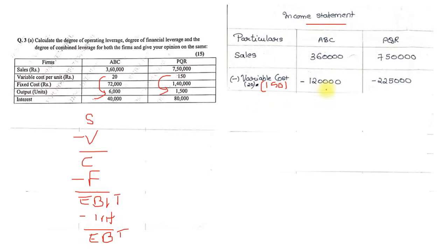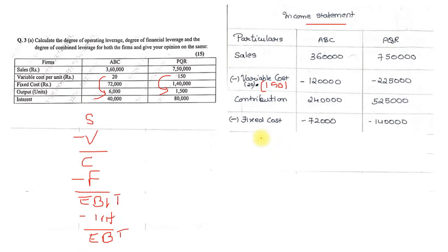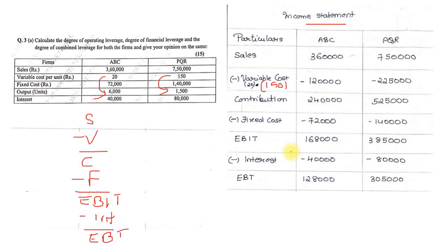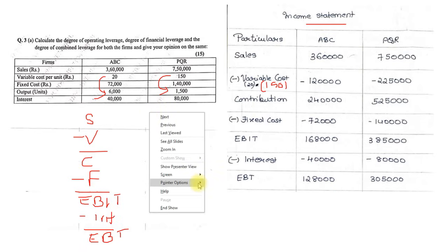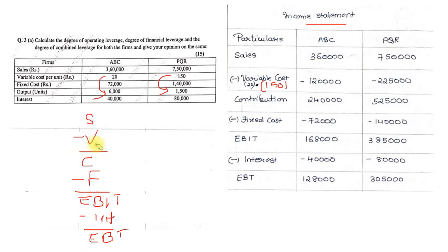Contribution comes to 2,40,000 for ABC and 5,25,000 for PQR. Less fixed costs of 72,000 and 1,40,000 respectively gives EBIT of 1,68,000 and 3,85,000. Less interest of 40,000 and 80,000 respectively gives EBT (Earning Before Tax) of 1,28,000 for ABC and 3,05,000 for PQR.